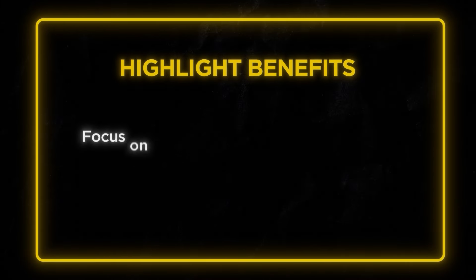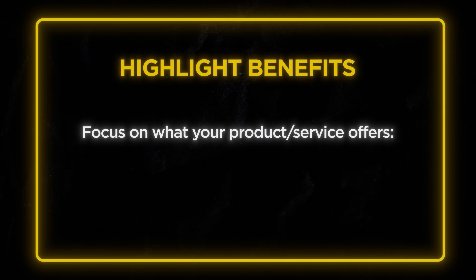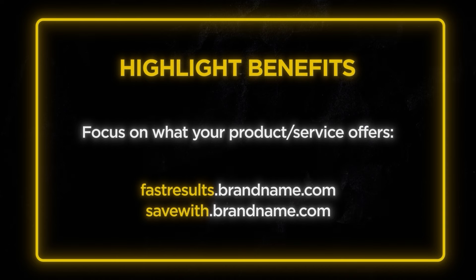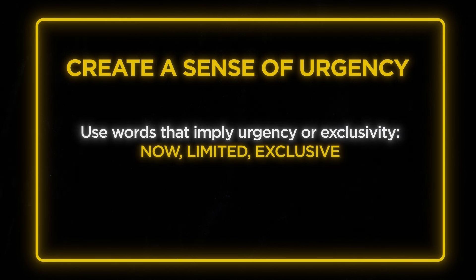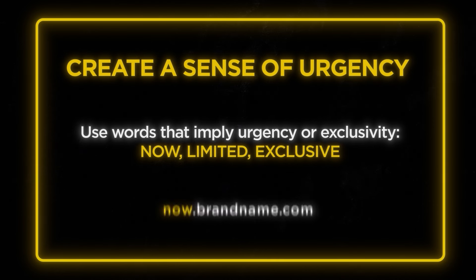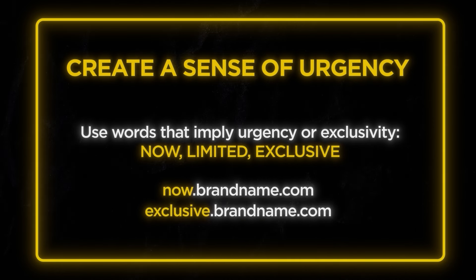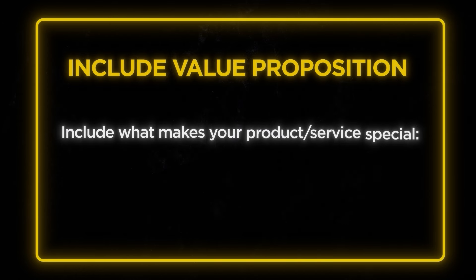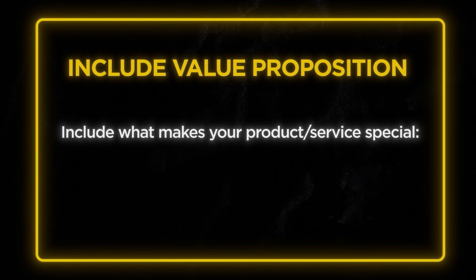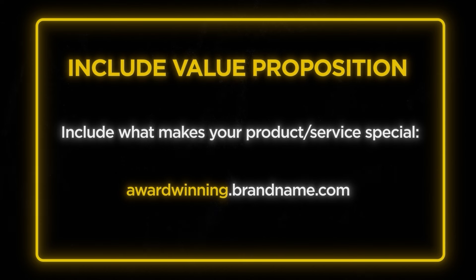Highlight benefits — focus on what your product or service offers. For instance, you could use fastresults.brandname.com or savewith.brandname.com. This way, your subdomain immediately tells visitors what they can gain. Create a sense of urgency using words like 'now', 'limited', or 'exclusive' — for example, now.brandname.com or exclusive.brandname.com. Urgency can motivate visitors to act quickly. Incorporate your unique value proposition: include what makes your product or service special, such as awardwinning.brandname.com or bestinclass.brandname.com.